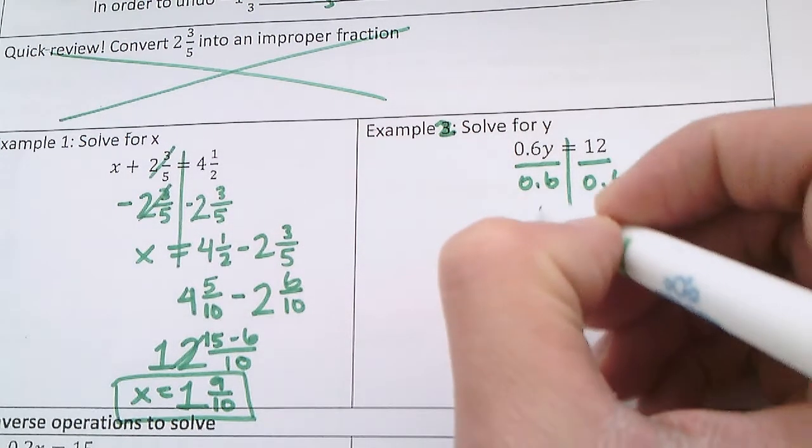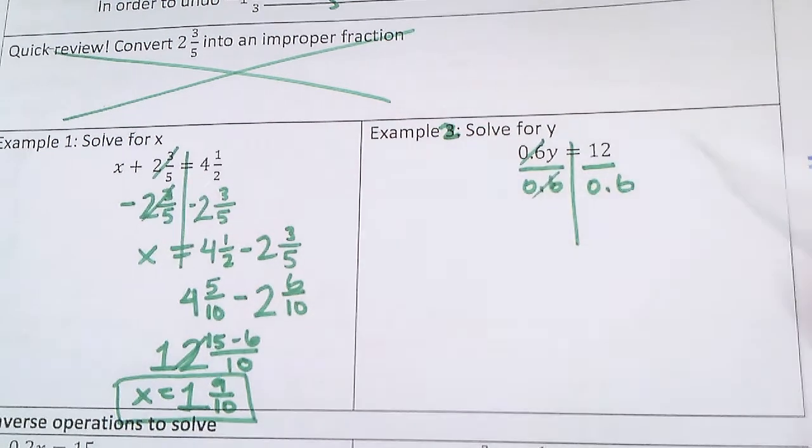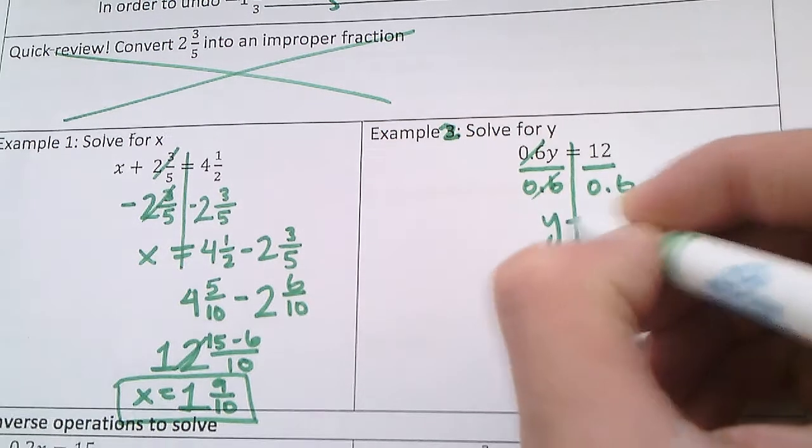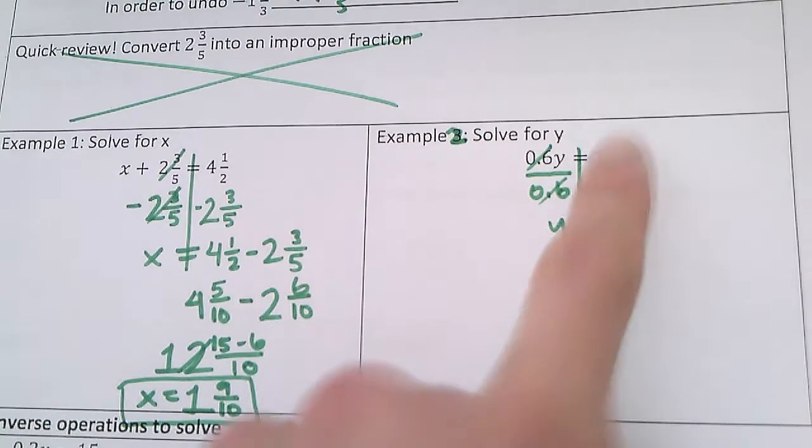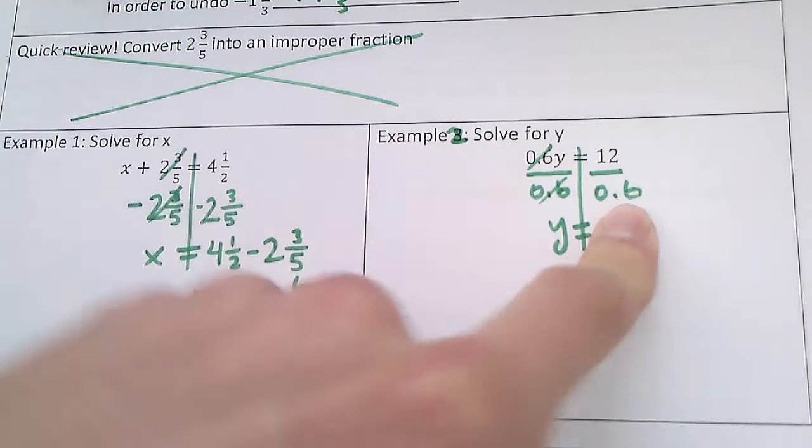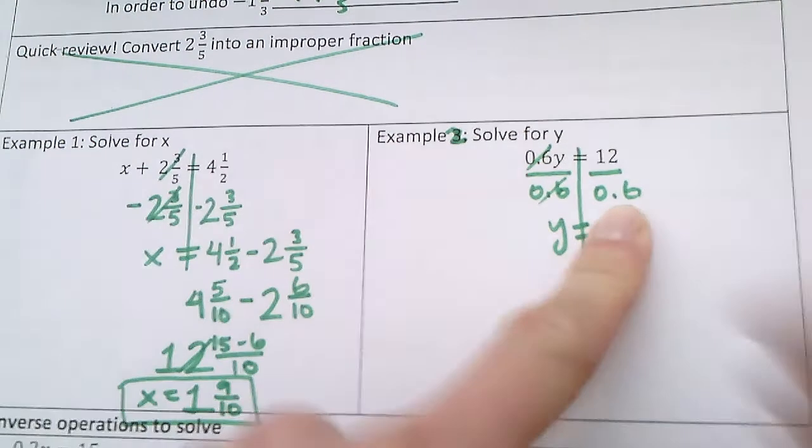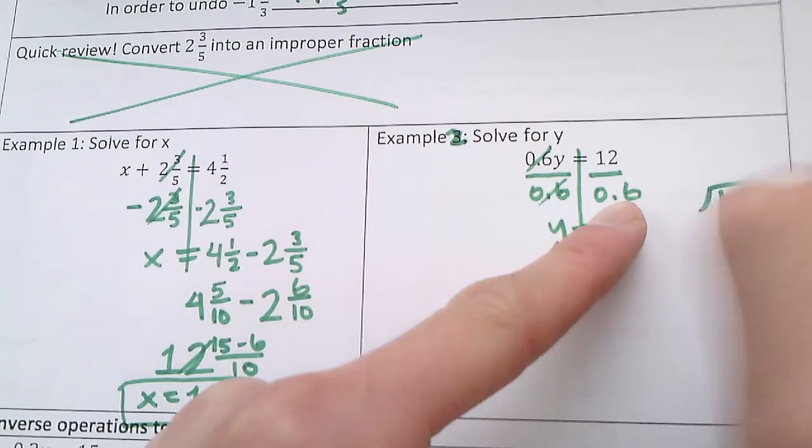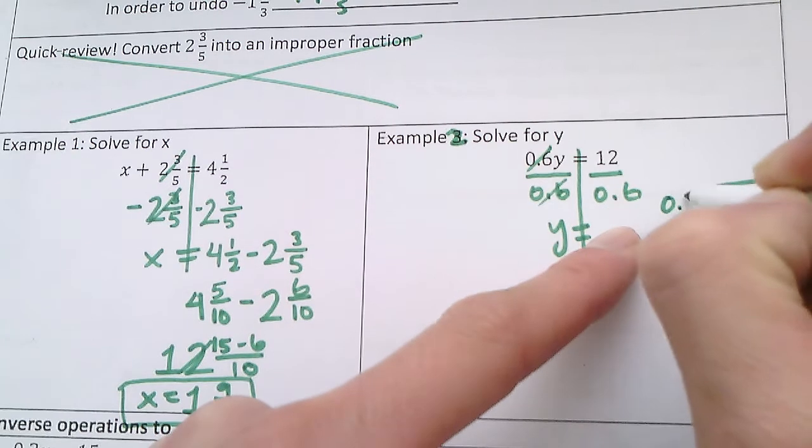And then the 0.6s cancel each other out, and I just have y equals, now it's going to be 12 divided by 0.6. So let's do this on the side here. 12 divided by 0.6.